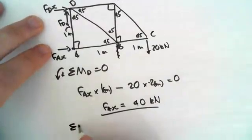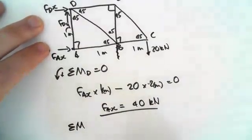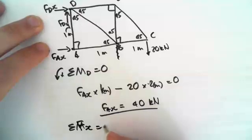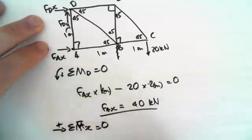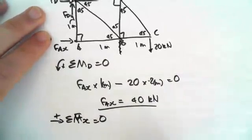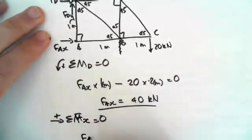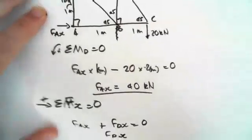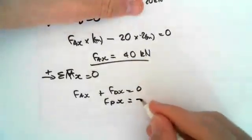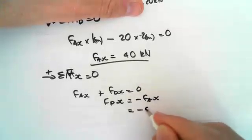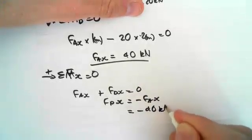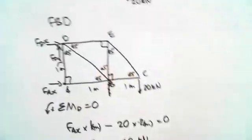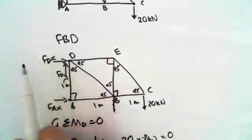So now let's just do sum of the forces in the x-direction equals zero. We get that FAX plus FDX equals zero. FDX equals negative FAX which equals negative 40 kilonewtons. So that means that it's in the opposite direction from what we've got it here. So it's going to the left.